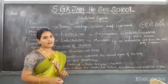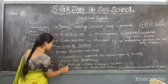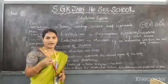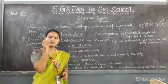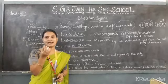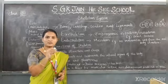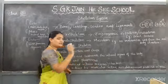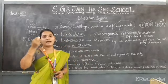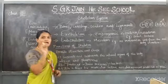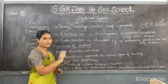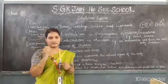Red blood cells (RBC) are produced in the bone marrow. Inside some bones, like the hip bone and thigh bone, bone marrow is present. Bone marrow is a spongy tissue present inside the bones. This bone marrow contains stem cells, and those stem cells develop into red blood cells. Red blood cells have red pigmentation, which is why our blood appears red in color.